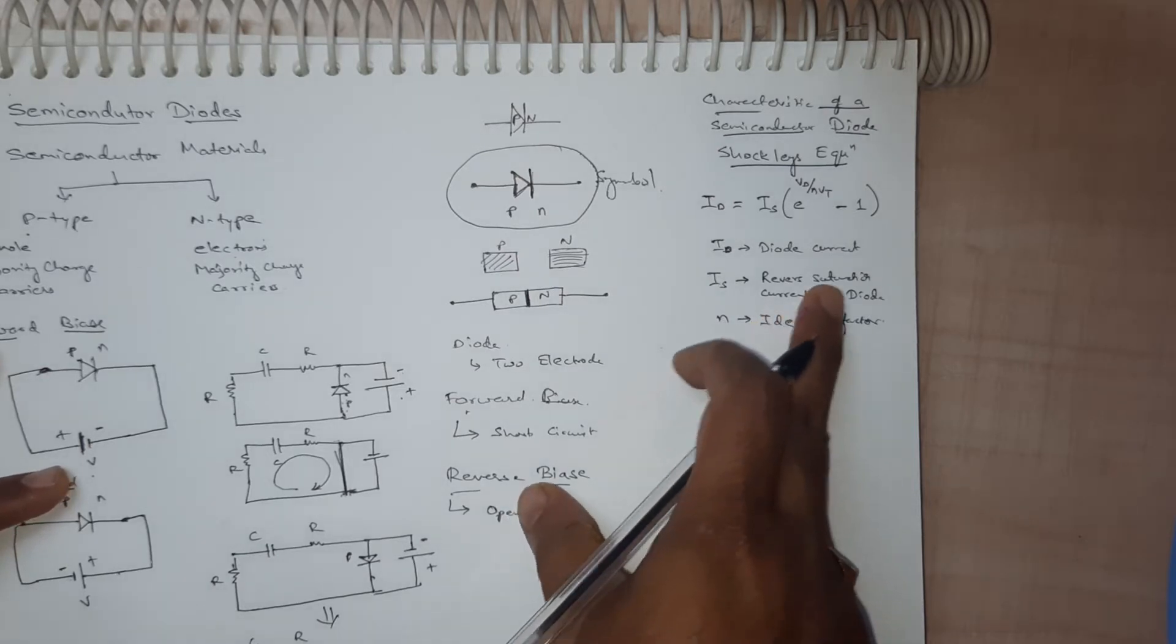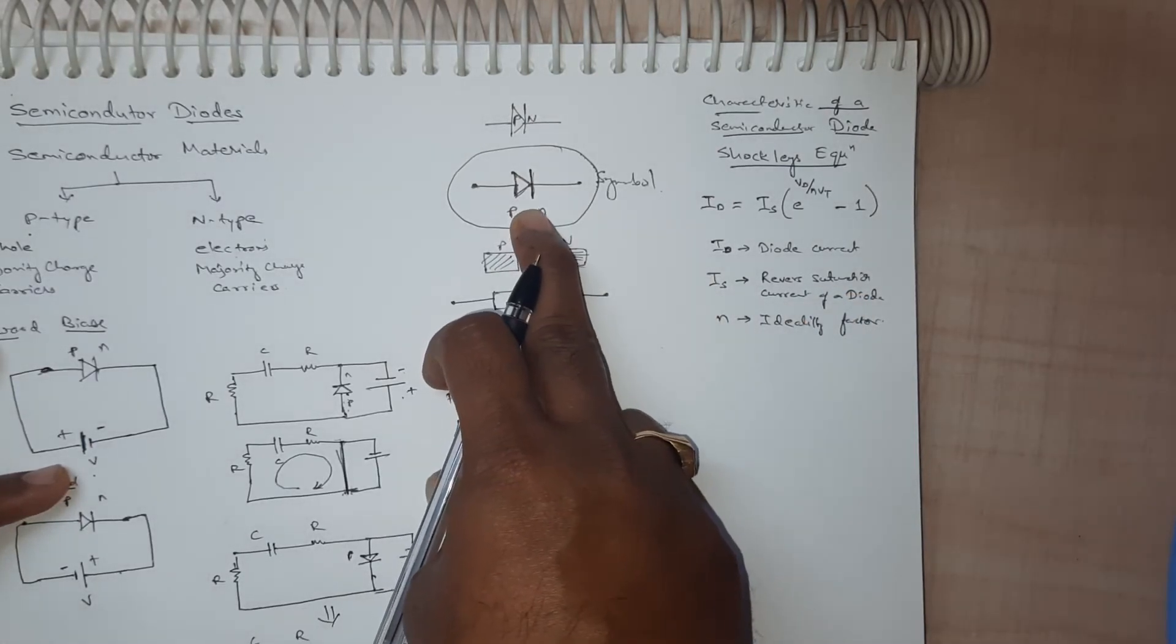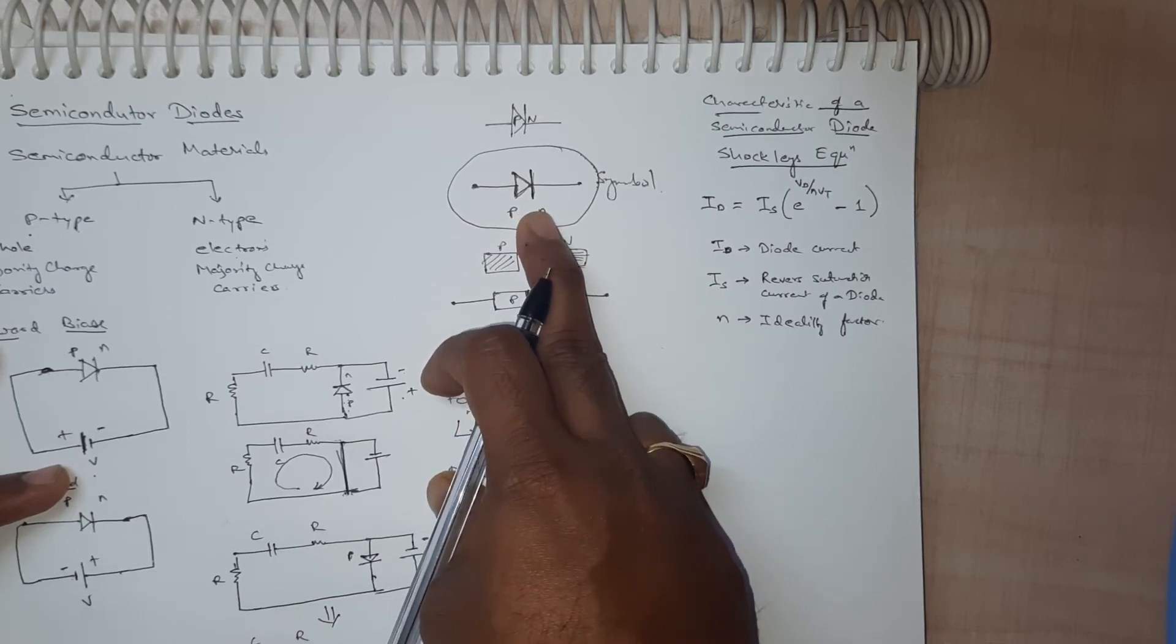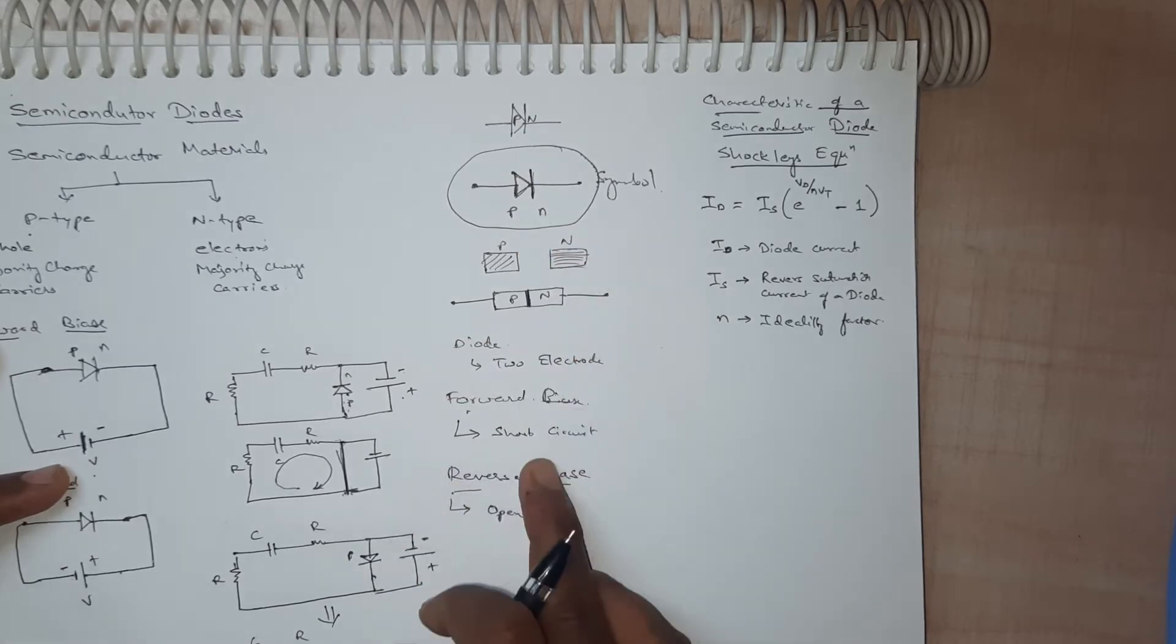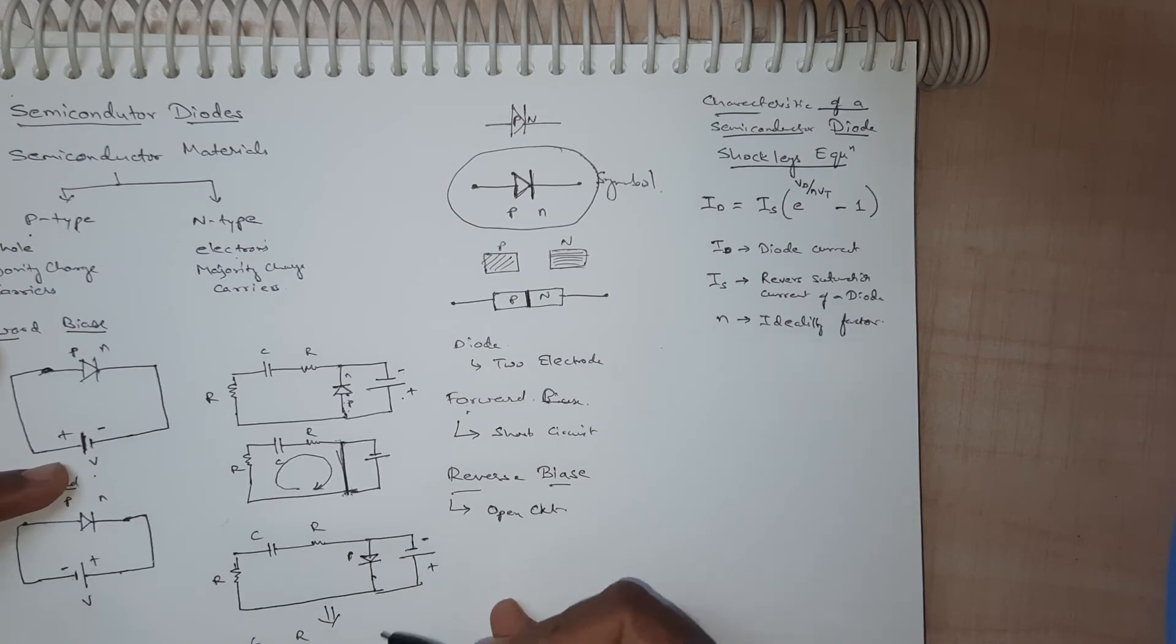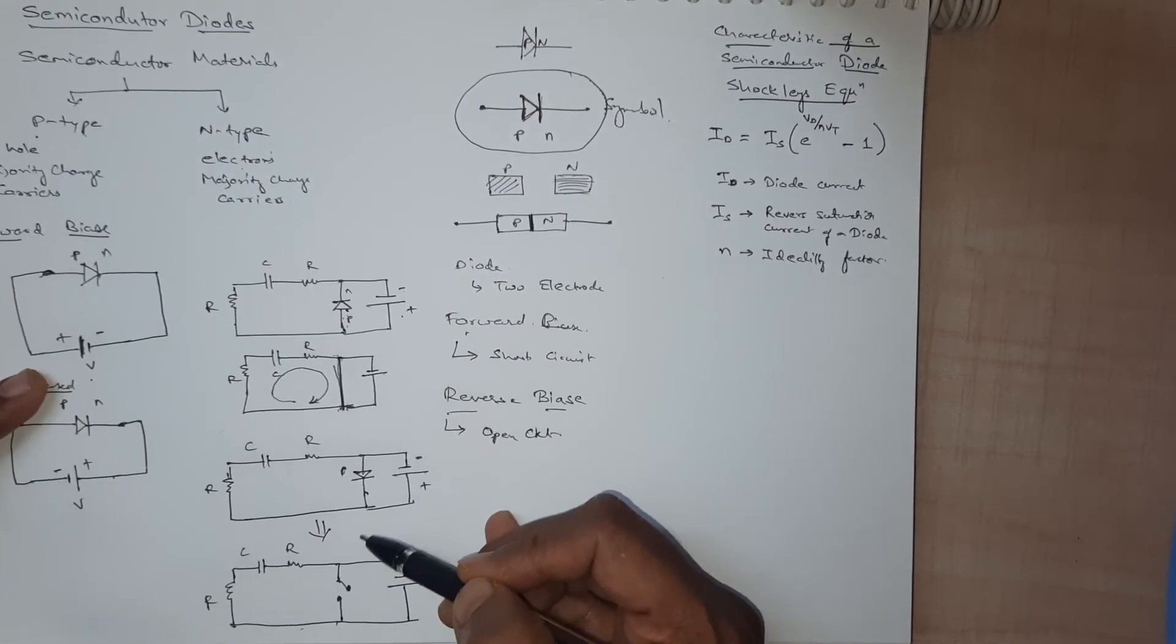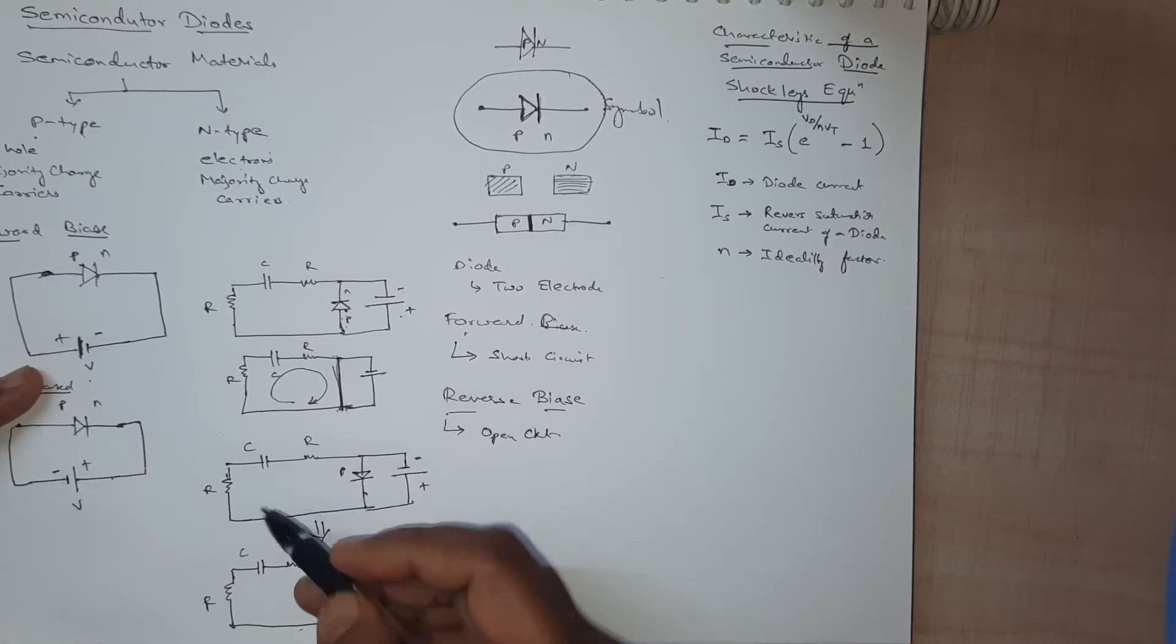Now what is reverse saturation current of a diode? Whenever the diode is reverse biased there is some leakage current or reverse saturation current of that particular diode. Whenever the diode is used in reverse bias it acts as an open circuit but there will be some small leakage current.